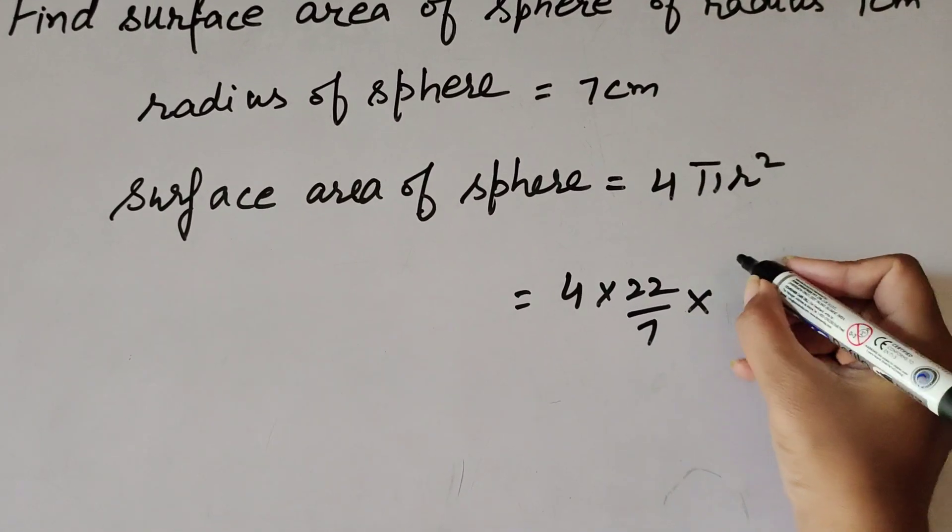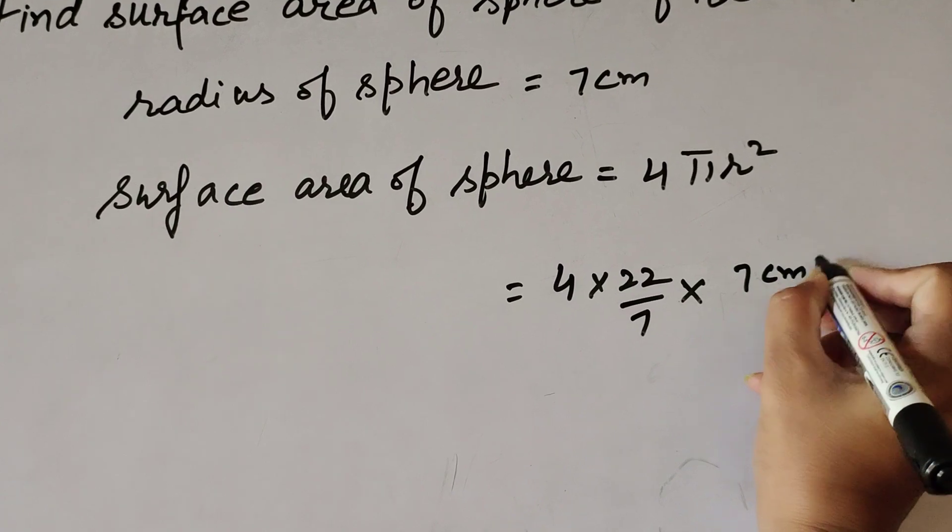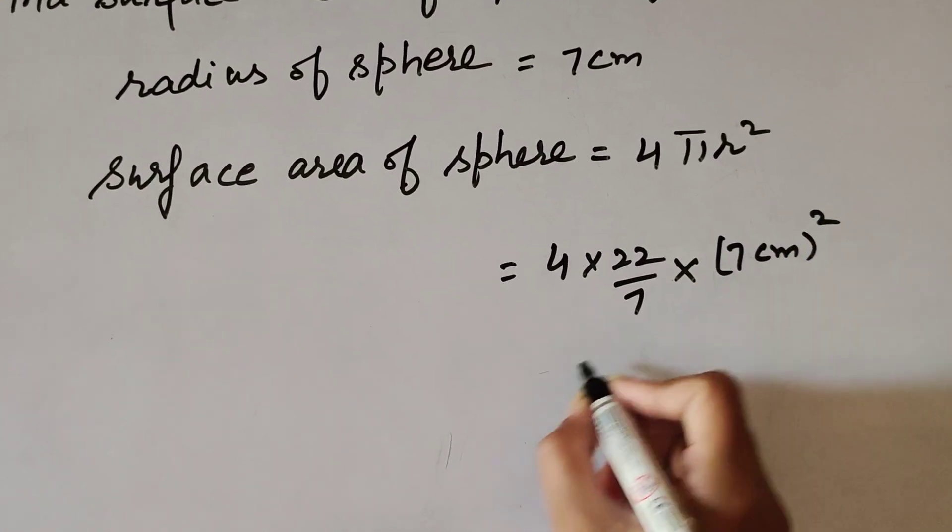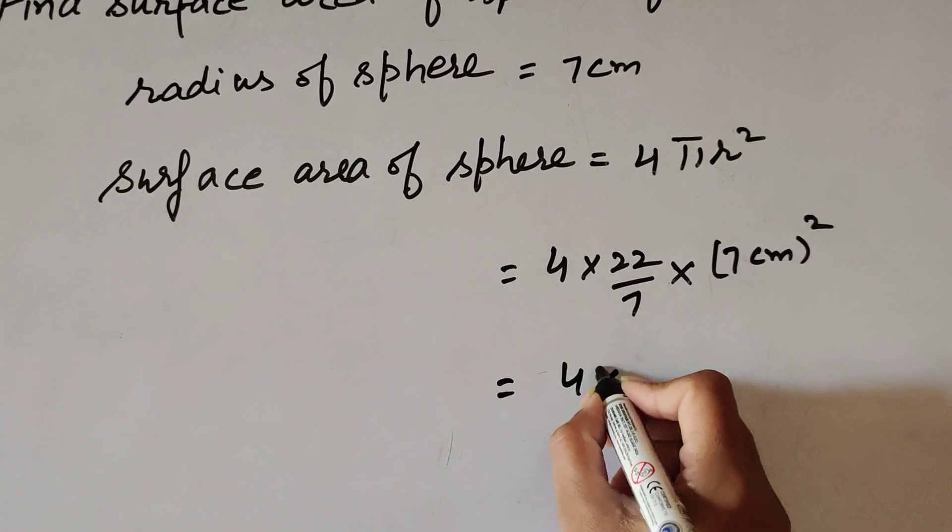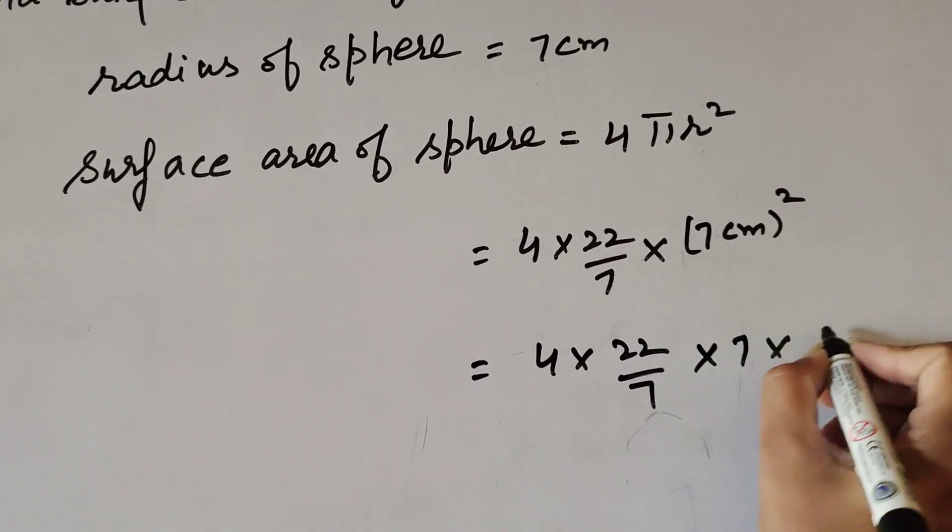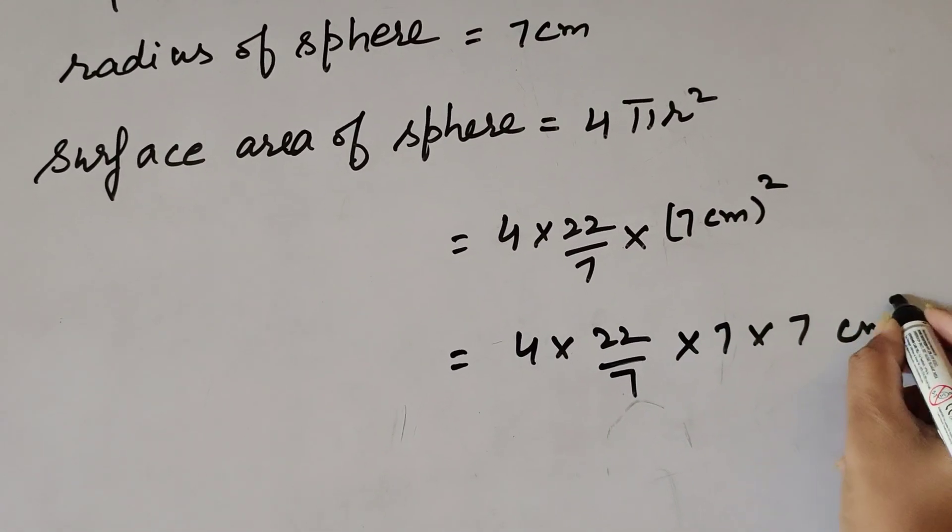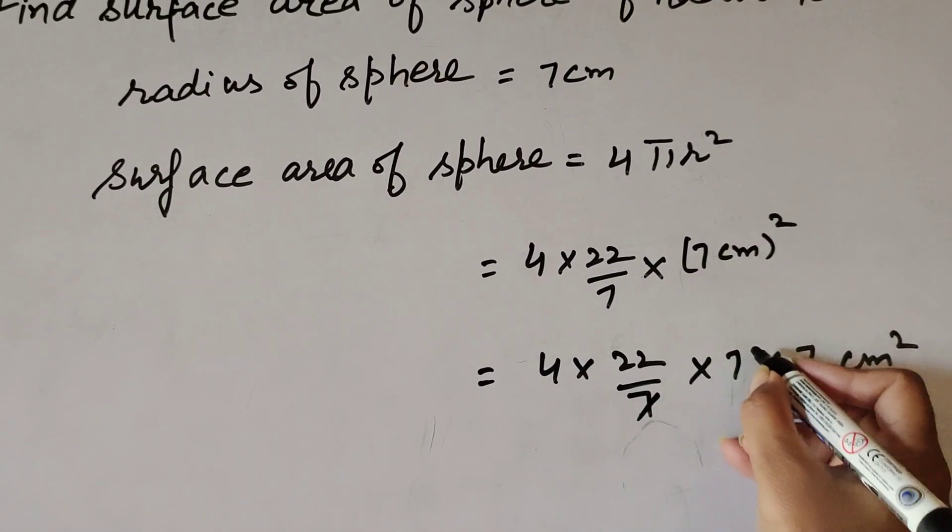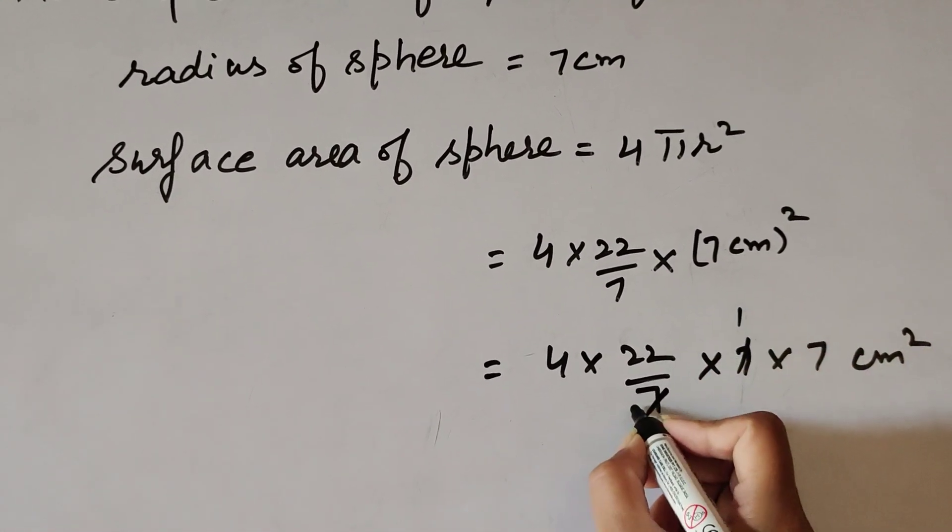It is 7 cm, and it is 7 cm². 4 multiply 22 over 7 multiply by 7 multiply by 7 into centimeter². 7 in denominator, 7 in numerator, both are divisible, so we cancel them.